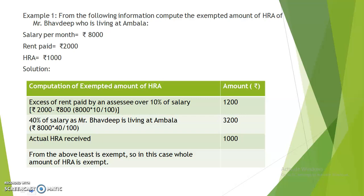So the difference will be Rs. 1,200. Then we will take 40% of salary as Mr. Bhavdeep is living at Ambala, so the amount will be Rs. 3,200. Actual HRA received is Rs. 1,000. The least of the above is Rs. 1,000, which is the actual HRA received. So HRA of Rs. 1,000 is exempt.